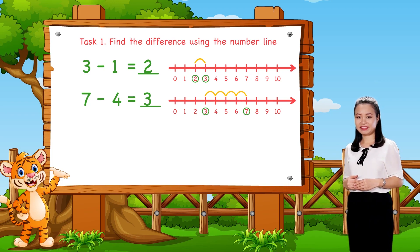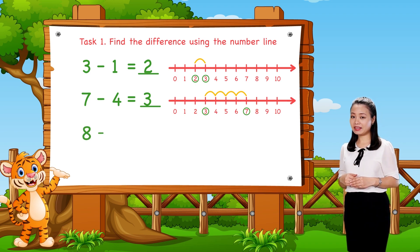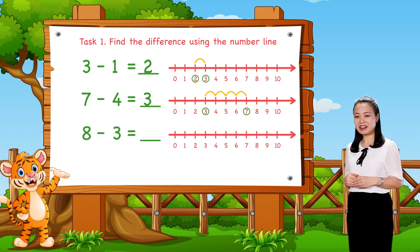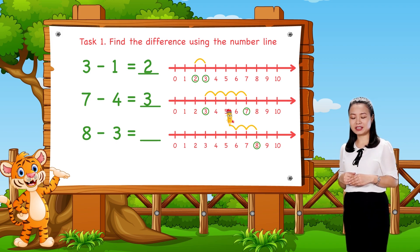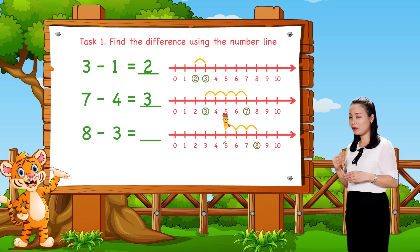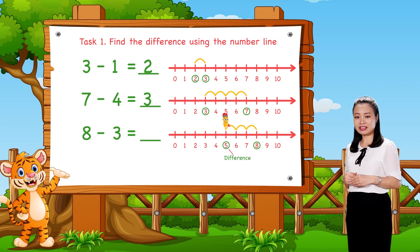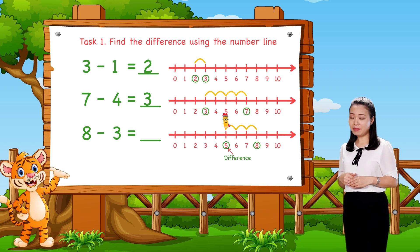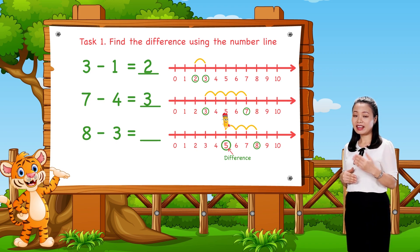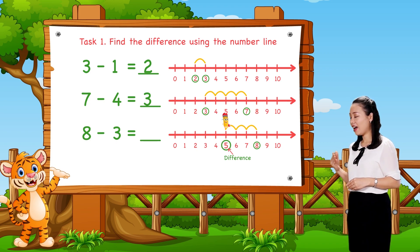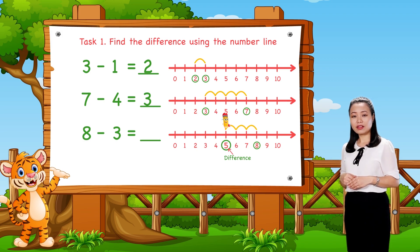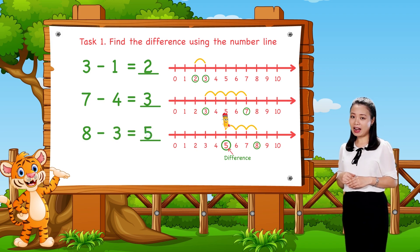Next, to find 8 minus 3. We start from number 8, then jump 3 numbers to the left. Then see the number where we land to find the difference. Here, we land at number 5. Therefore, 8 minus 3 equals 5.